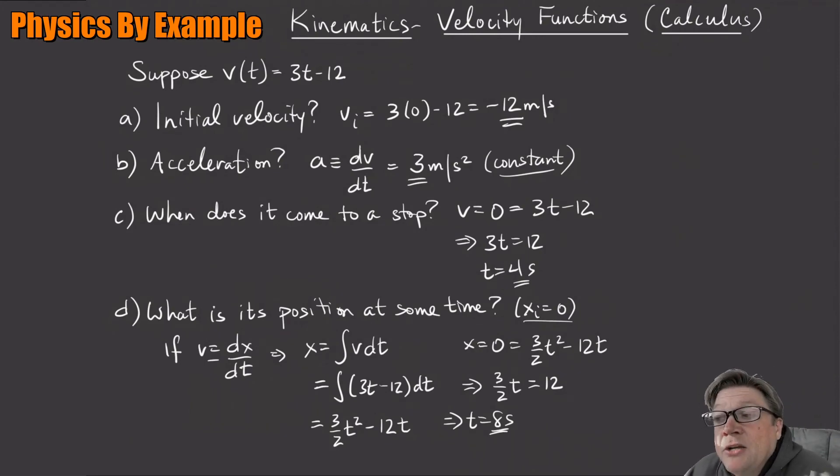After 8 seconds this thing will be back at the origin. Just to make sure we didn't screw it up, go ahead and put 8 seconds back into here and make sure that everything is all right. 3 halves, t is 8, that would be 64 divided by 2 is 32, times 3 is 96, minus 12 times 8 which is 96. Sure enough zero.